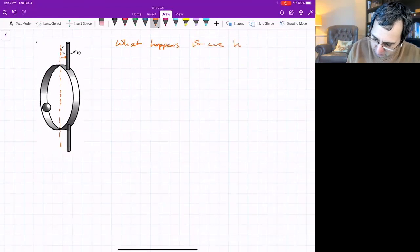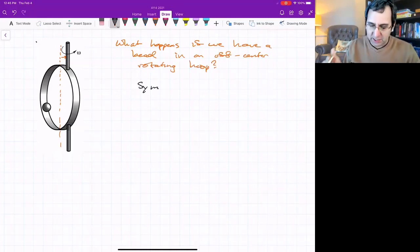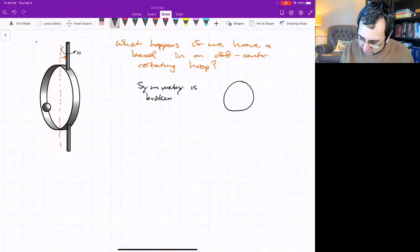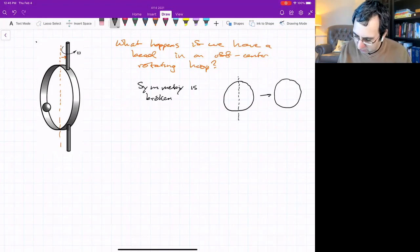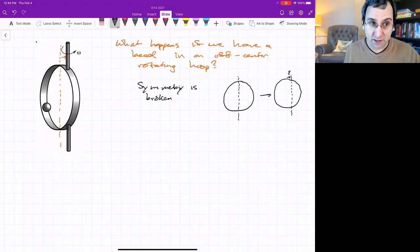What happens if we have a bead in an off-center rotating hoop? The left-right symmetry is broken. Seen in the front, the hoop would look like that. This has left-right symmetry. Now we're going to off-center by some amount, epsilon. What will happen to the bifurcation diagram?